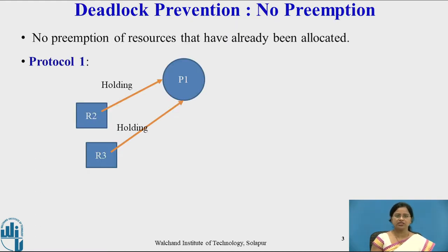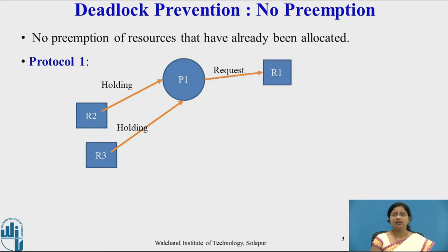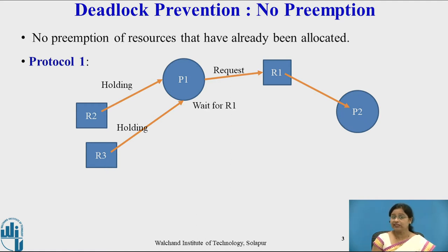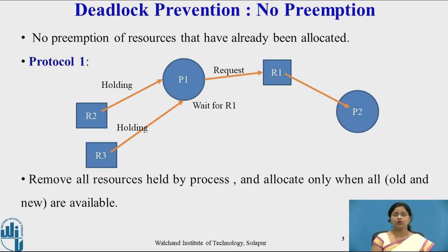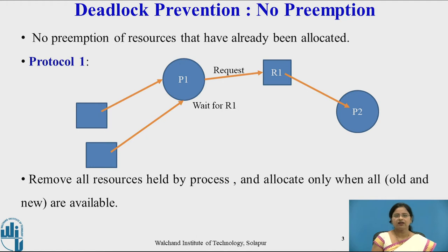The first protocol for no preemption is: do not preempt resources which are already allocated. However, for deadlock prevention we will allow preemption of resources. If process P1 is holding R2 and R3 and requests resource R1, which is already held by process P2, then P1 will enter a waiting state for R1. The protocol says to remove all resources already held by the process and allocate only when all old and new resources are available. So R2 and R3 are removed from P1, and P1 resumes only if R2, R3, and R1 are all available. This is protocol 1.